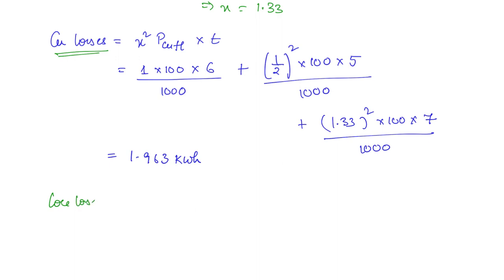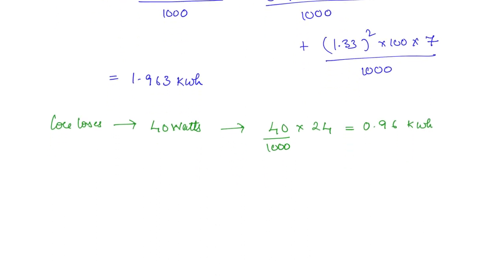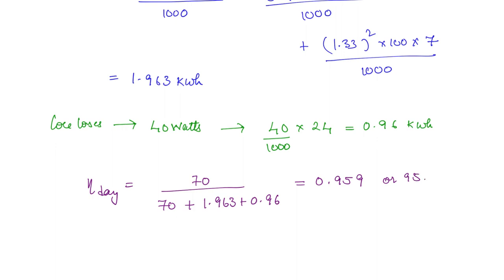The core loss energy is 0.96 kWh over 24 hours, since core losses exist even under no load. Total losses = 1.963 + 0.96 kWh. Finally, the all-day efficiency = 70 / (70 + 1.963 + 0.96) = 0.959, or 95.9 percent.